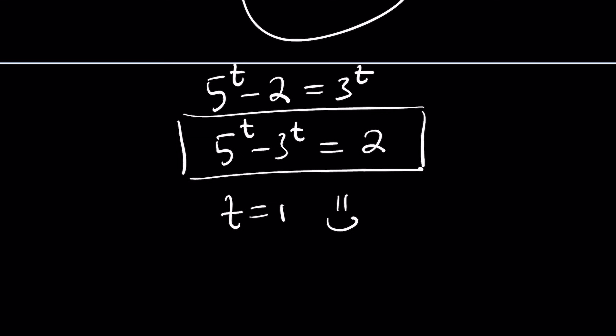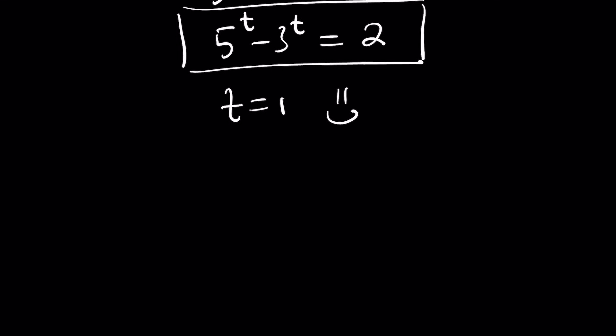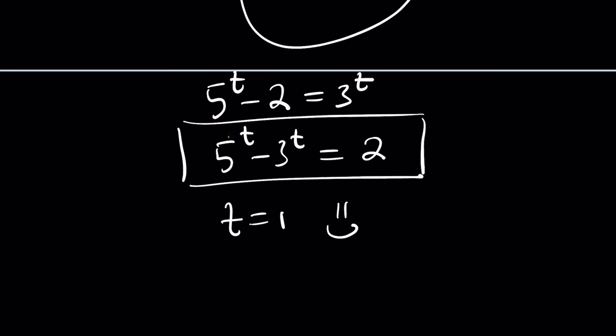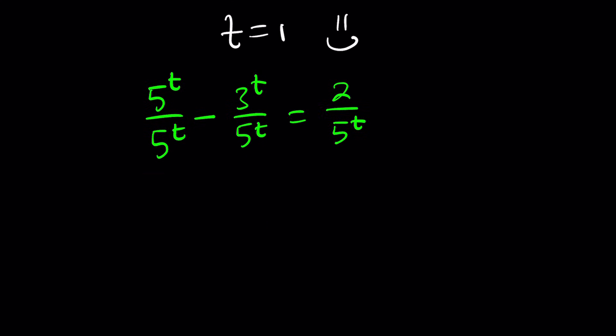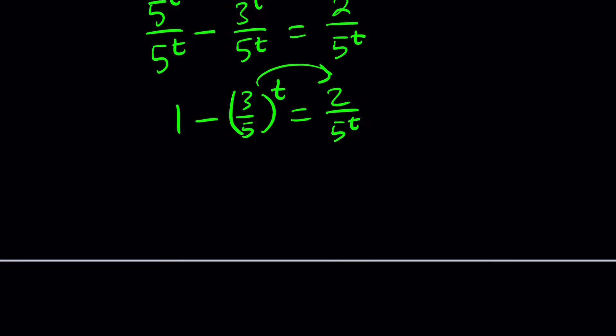Both of these are increasing functions, so their difference, we don't know what's going to happen. We can divide everything by 5^t, and that's going to make our life easier. 1 minus (3/5)^t equals (2/5)^t. I'm going to put this on the right-hand side: 1 equals (3/5)^t plus (2/5)^t, which you can write as (3/5)^t + 2(1/5)^t.